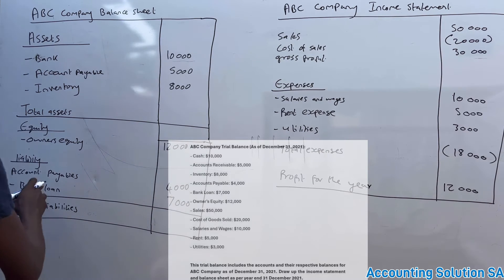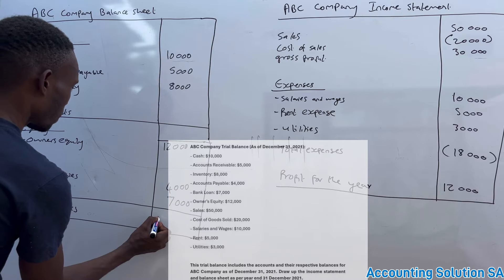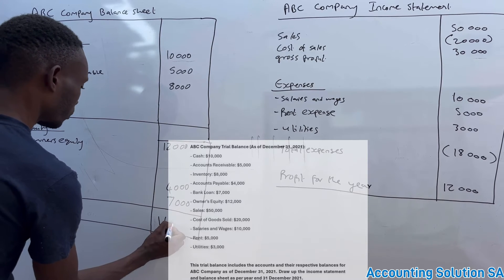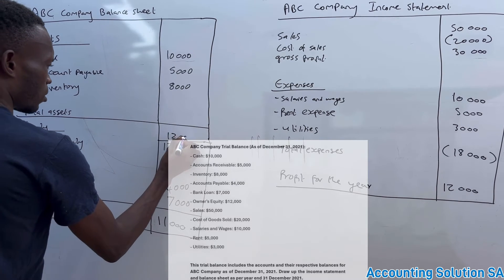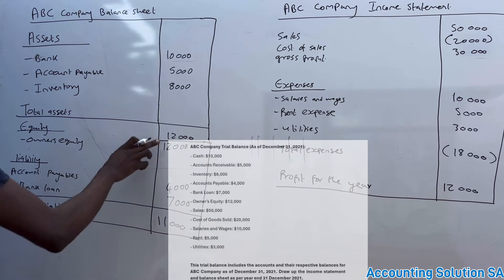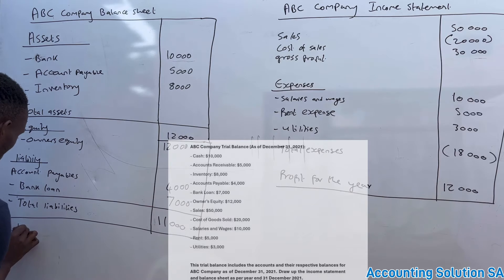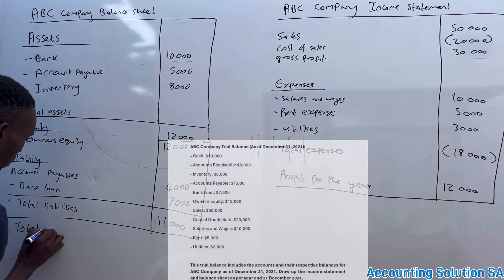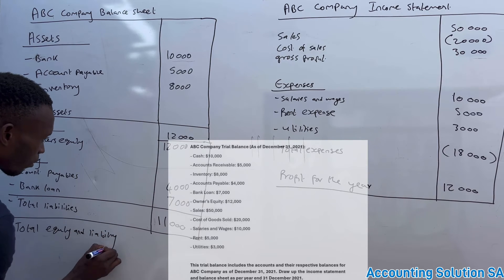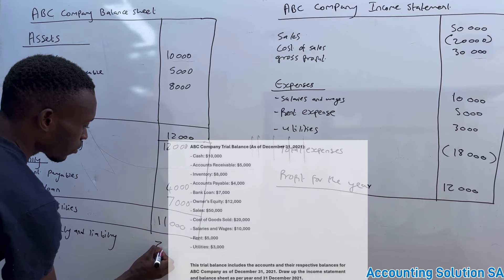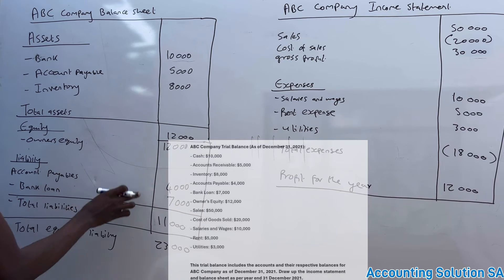Total liabilities: 7,000 plus 4,000 gives us 11,000. Our equity is 12,000. So total equity and liabilities is 12,000 plus 11,000, giving us 23,000.